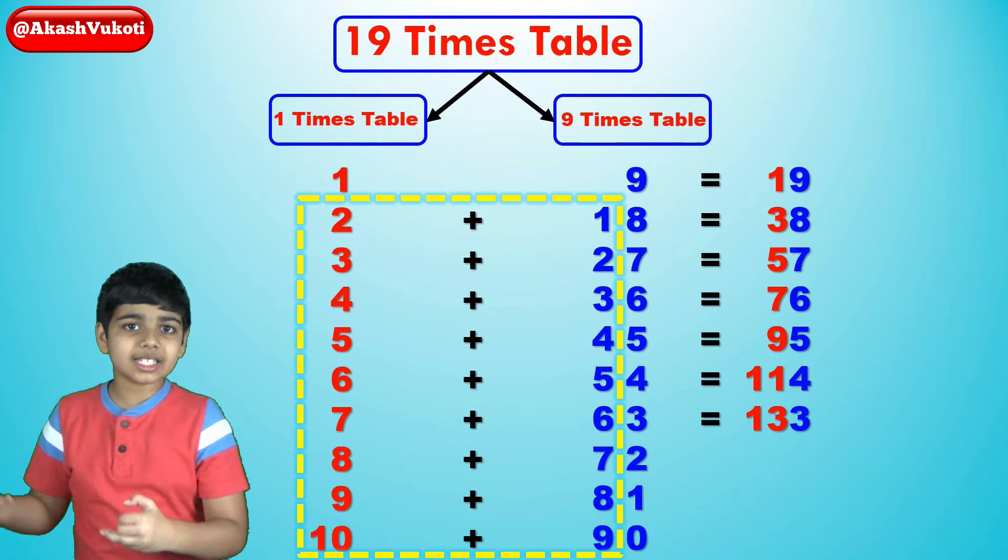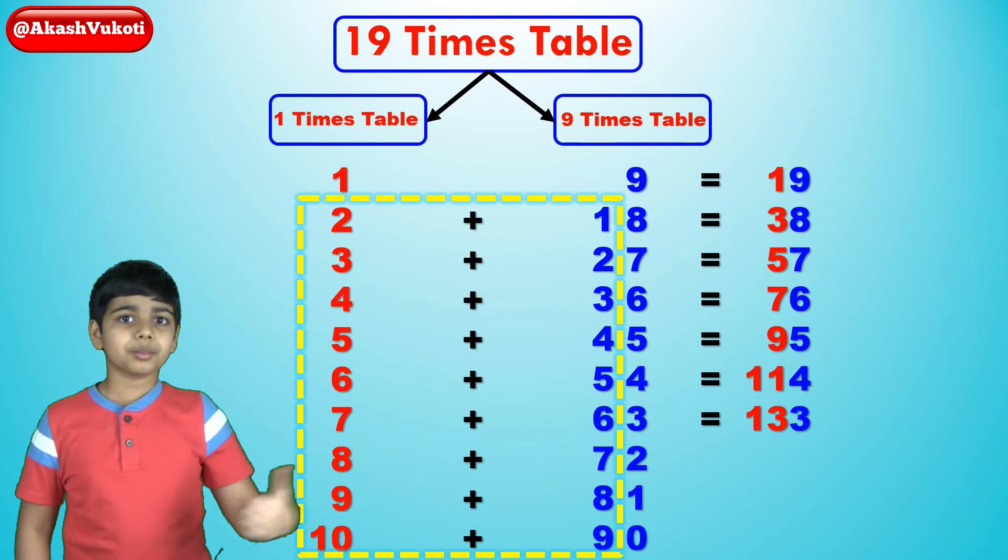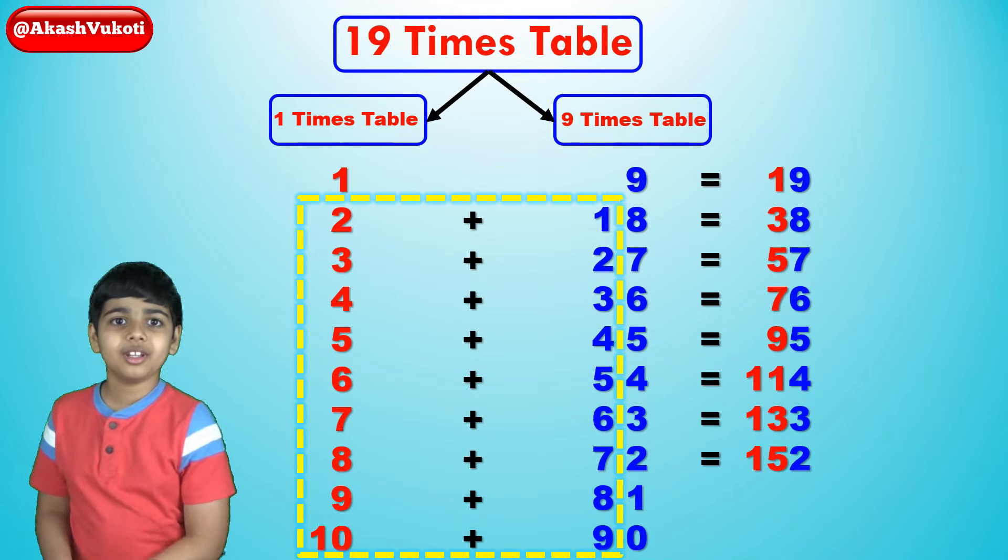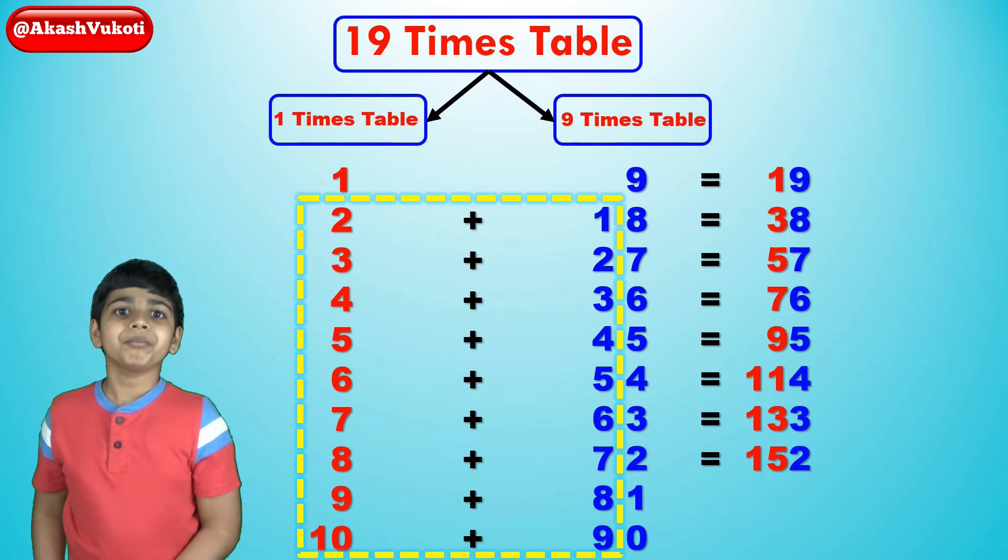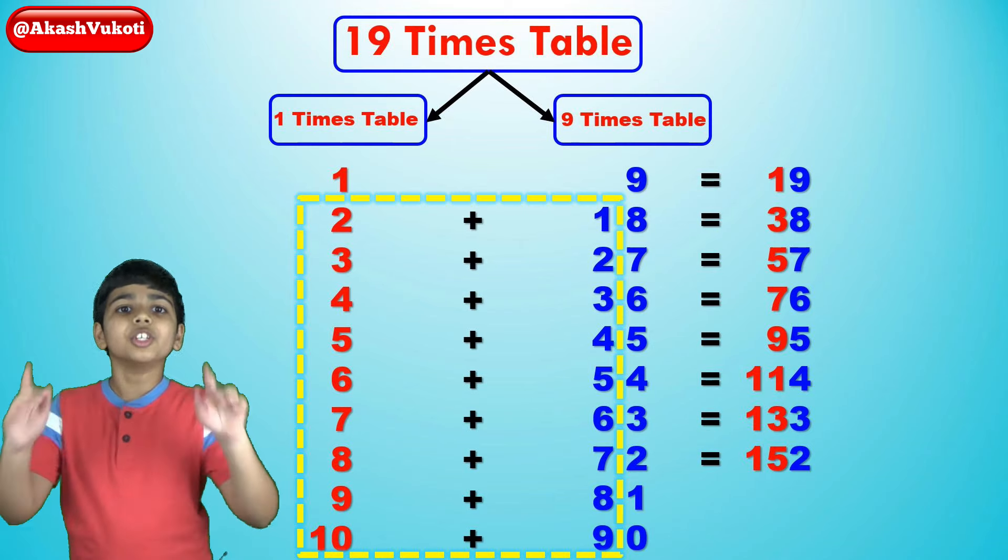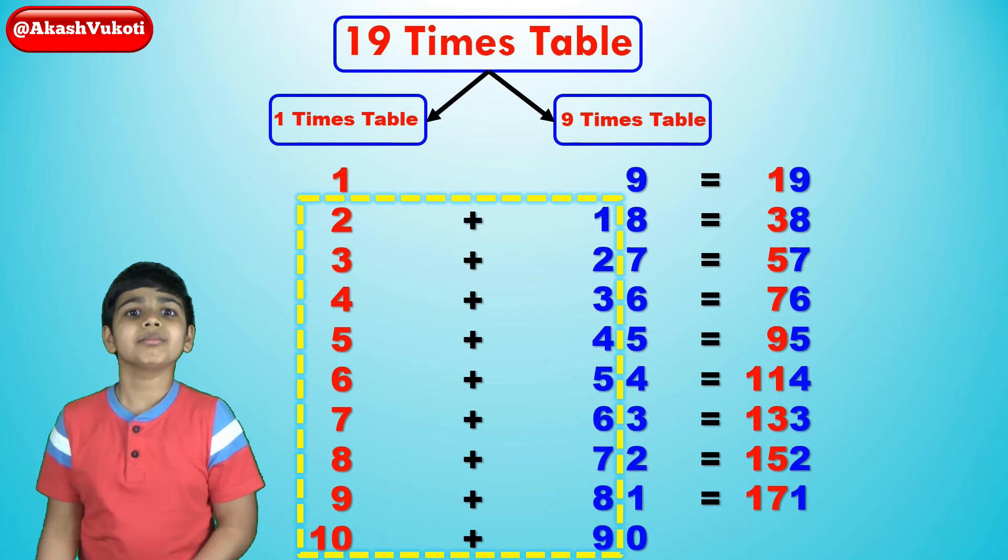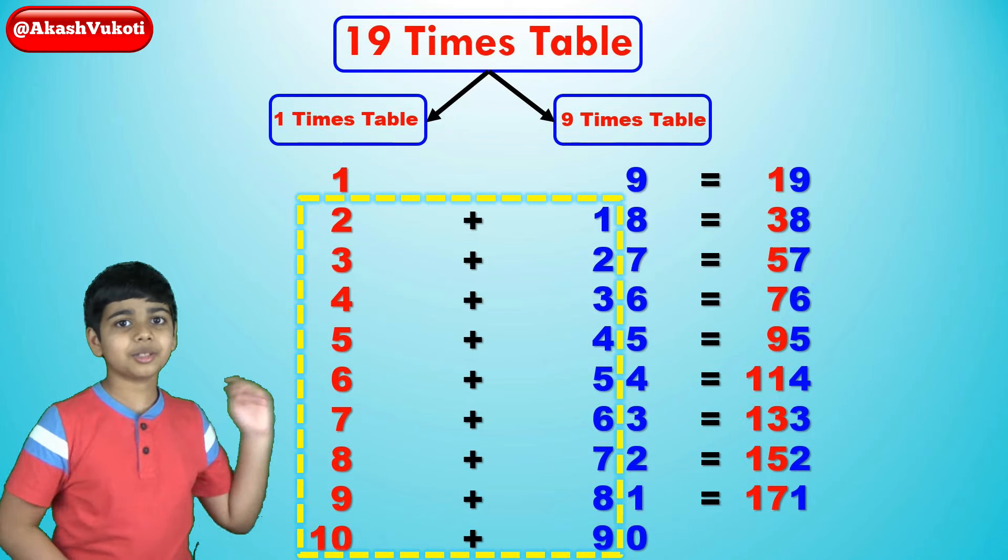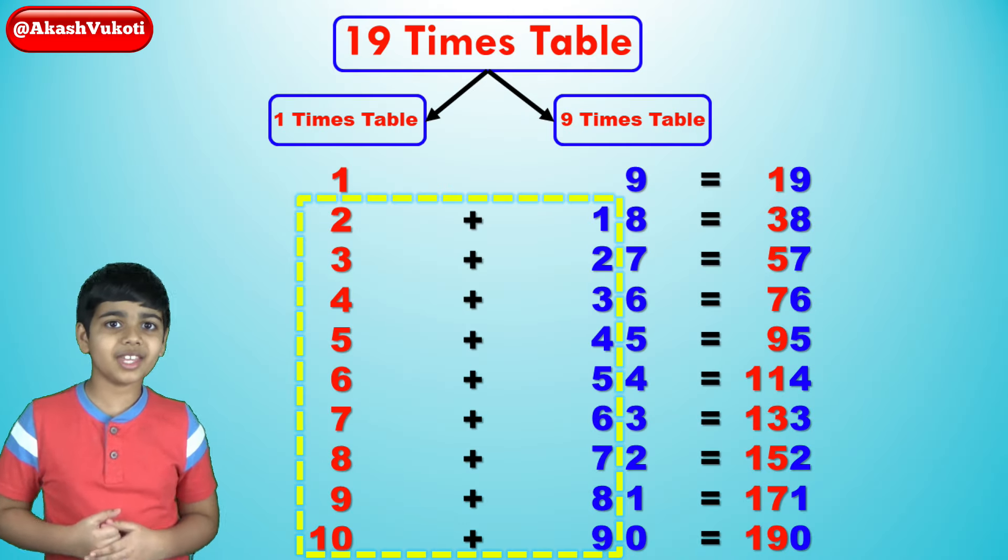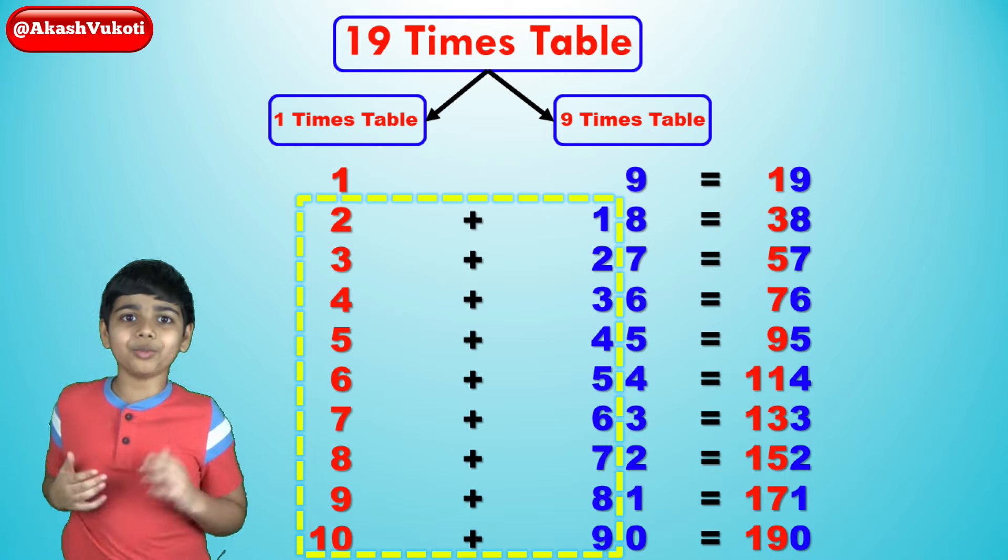Then 19x8 is 8, 72, so what we do here is 8 plus 7, that's 15, becomes 152. And then 19x9 becomes 9, 81, and 9 plus 8 is 171. And finally 19x10 is 10, 90. 10 plus 9, 19, hence we get 190. And that is how we get right here, the table of 19. It's the 19x table right there. Super neat trick, and it just works great.